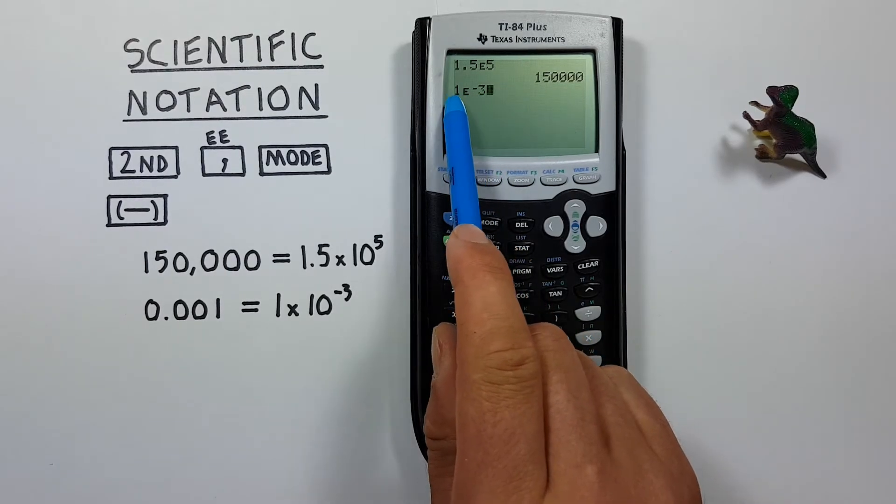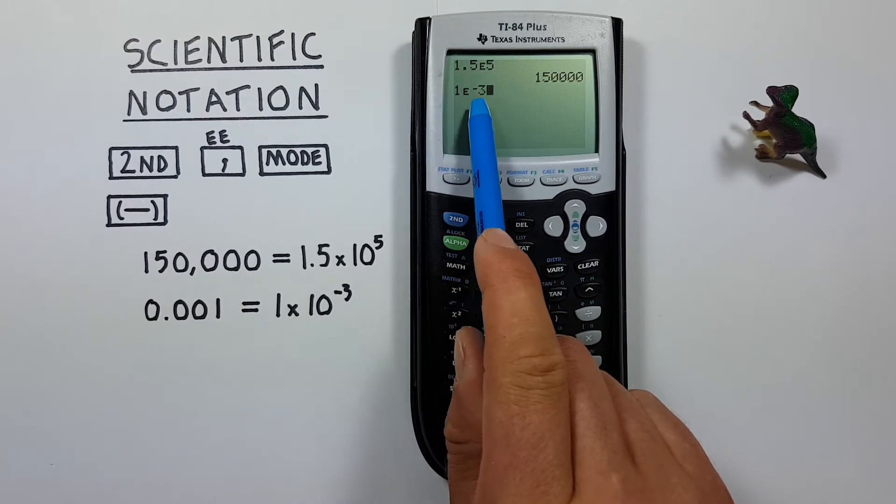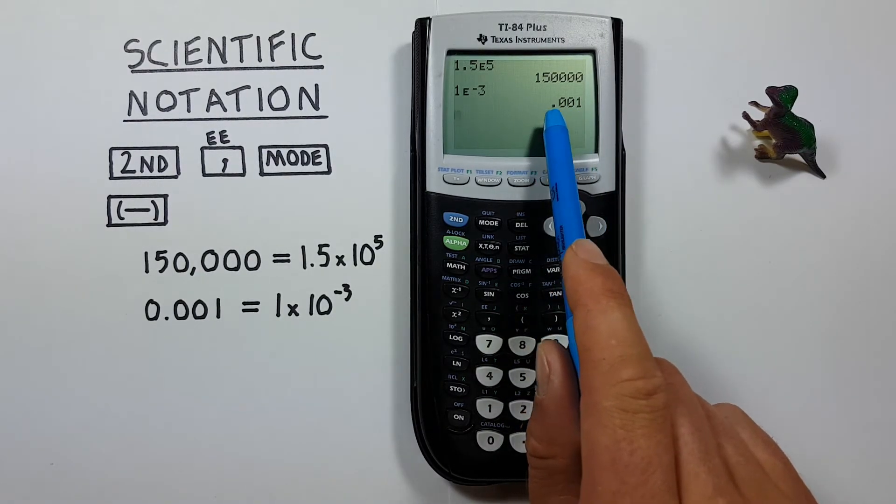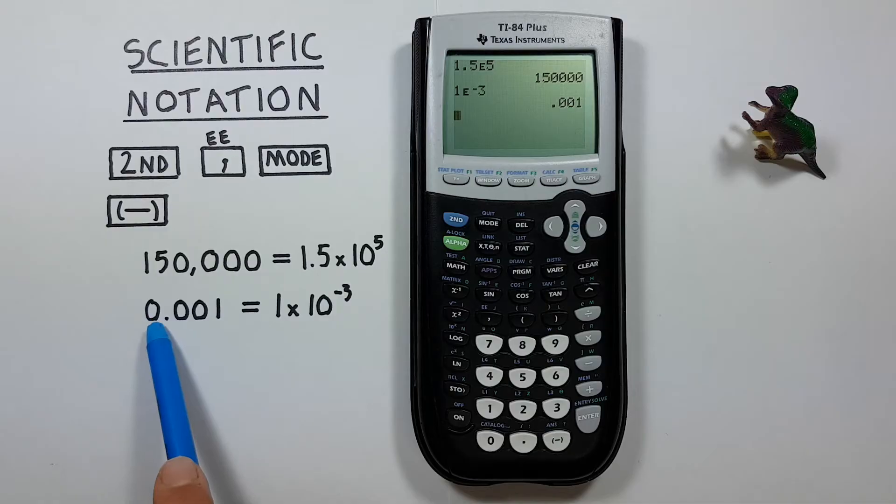So this is equal to 1 times 10 to the power of negative 3. Press enter. And we see we get our result, 0.001, which is correct.